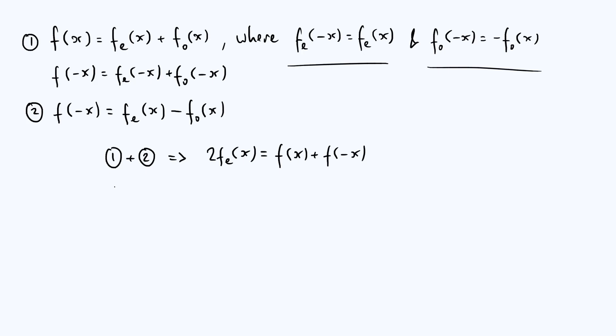And then similarly, if we want to make fe cancel and get an expression for fo, we can instead take equation one and subtract equation two. That's going to give us something very similar looking. We get twice the odd part, fo of x, is just f of x minus f of minus x. So of course we can then just divide both of those equations by two, and we found our even and odd parts.